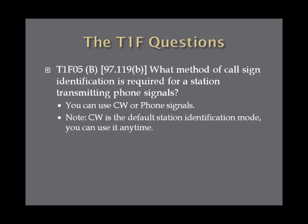What method of call sign identification is required for a station transmitting phone signals? For phone signals and pretty much any other mode you're using, you can transmit your call sign via that mode. However, keep in mind that no matter what mode you're using, you can always identify yourself using CW or Morse code. So there are two possibilities: phone signals or CW.